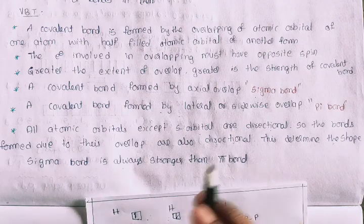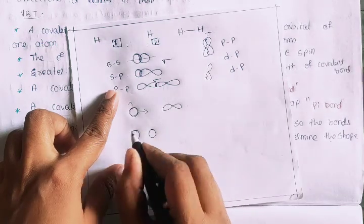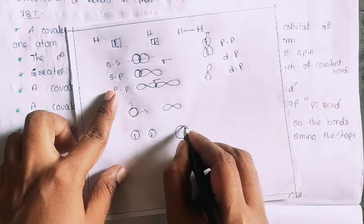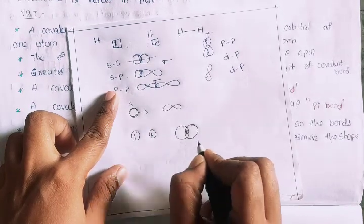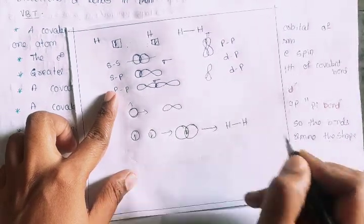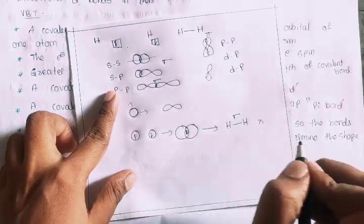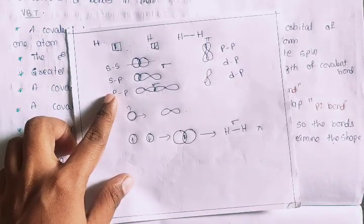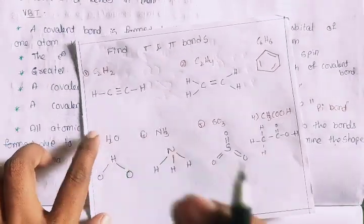So basically in valence bond theory, two atomic orbitals that are half-filled — up and down spin — club together and overlap. We can see the formation of a covalent bond. This gives us sigma bonds and pi bonds. This is valence bond theory, and this is how you structure sigma bonds and pi bonds.